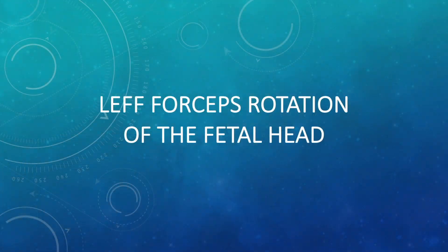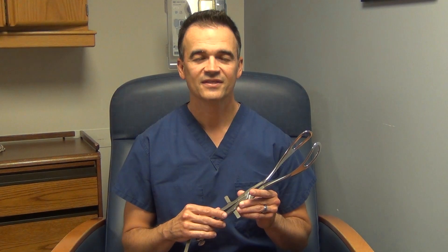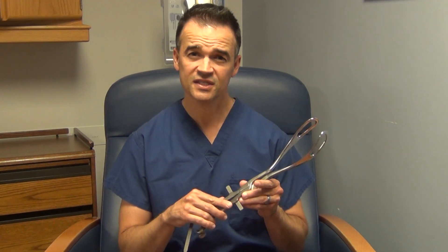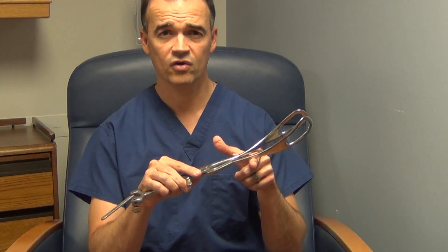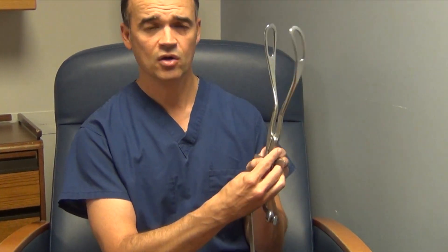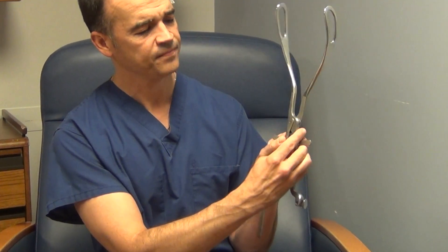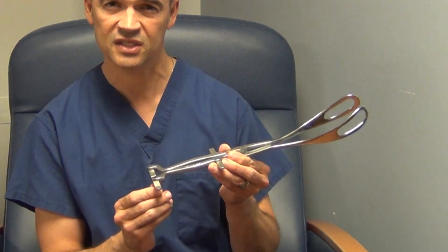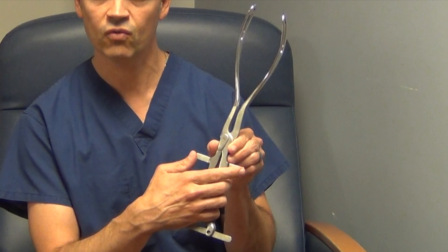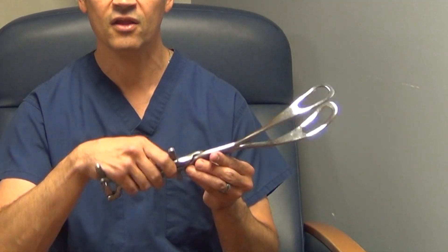Next, we will review the technique for left forceps rotation of the fetal head. Dr. Morris Leff from New York City first published on his new rotational forceps in 1955. As you can see, left forceps are small and light and really can only be used for rotation and not extraction. These small fenestrated blades have a very minimal cephalic and pelvic curve. The small flattened shanks are brought together by what can be described as a French lock. The handles are light and in the back there is a flange which is brought together by a wing nut which secures the branches together. At the top of the handle are two directional posts which identify the position of the fetal head throughout the rotation.